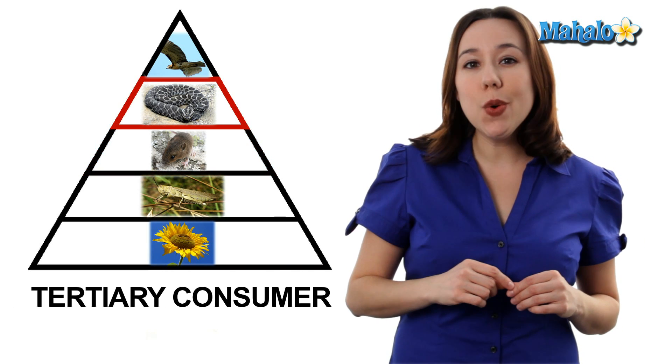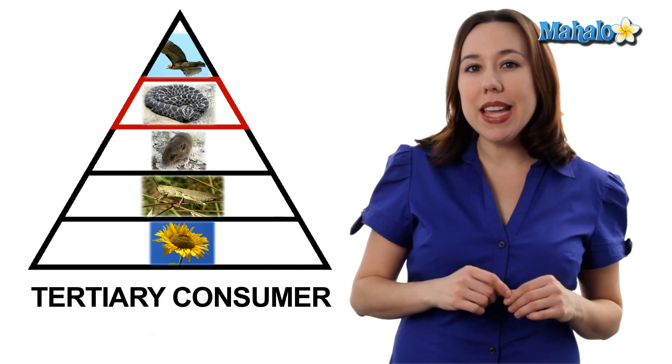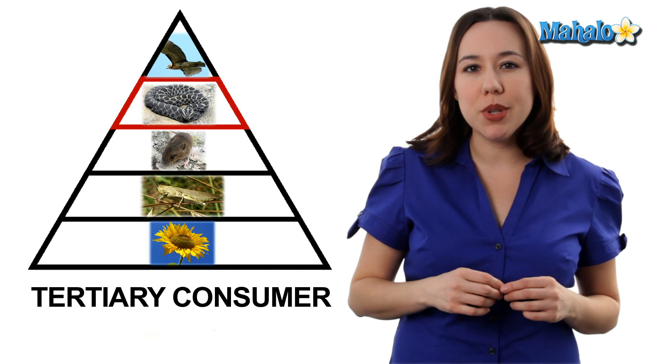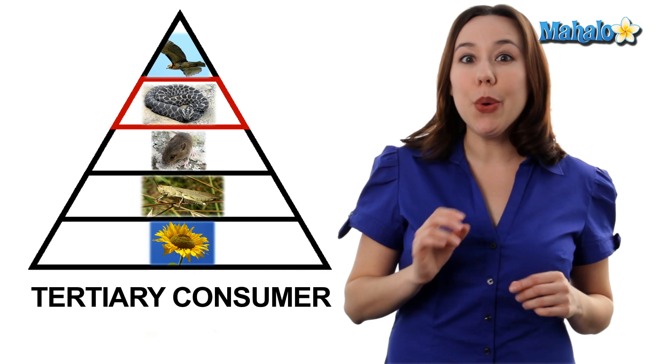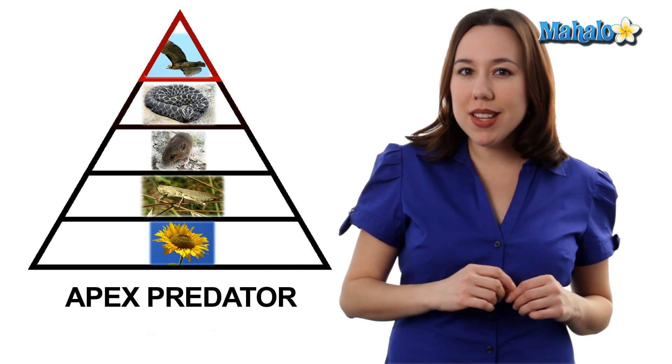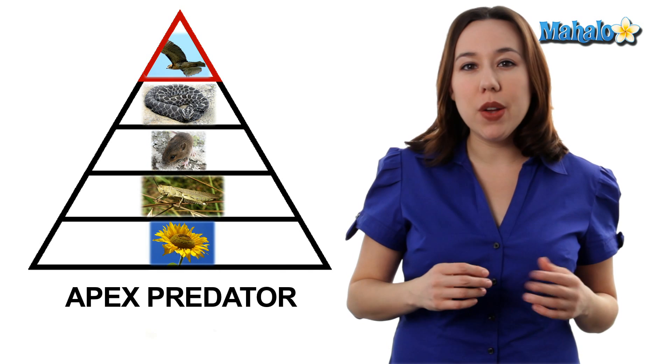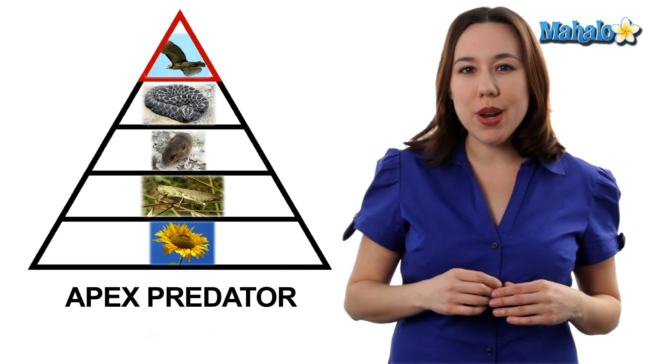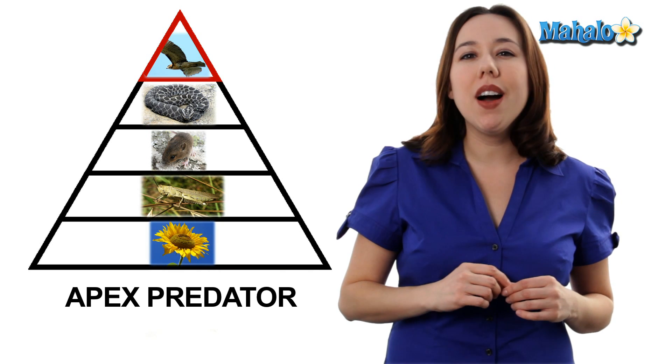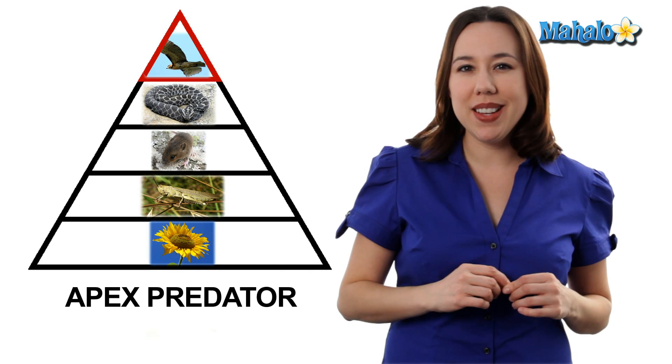That field mouse is then going to be eaten by a tertiary or third level consumer, let's say a rattlesnake. And that rattlesnake can then be eaten by a quaternary or apex predator — a red-tailed hawk will do just fine. Trophic structure continues to drive evolution as prey become better adapted at avoiding predators, and those predators get better adapted to getting their prey.